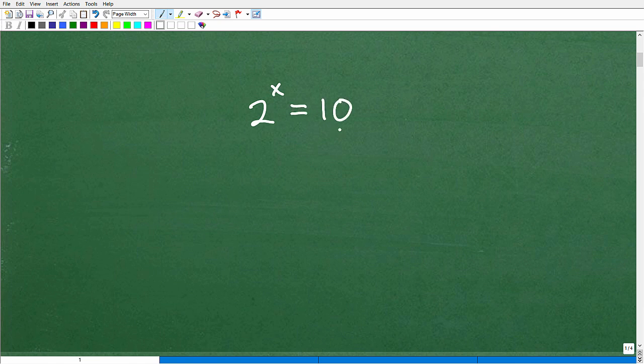Well, now we have a different situation because I can't express 10 as a power of 2, right? So 2 cubed is 8, and 2 to the fourth is what? That's 2 times 2 times 2 times 2. That's 16.